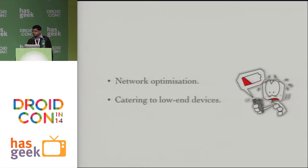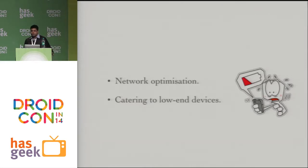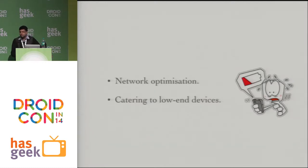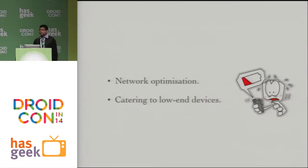If I were to pick two things that as an app developer you should care about if you're targeting the whole of India, it would be these two: network optimization and catering to low-end devices. As mentioned in yesterday's talk by Gulzar, a lot of network connectivity in India is flaky, and most people are not on Wi-Fi and 3G the way we would like to believe. We at Hike experienced all of this while building, and we continuously optimized our network communication layer to cater to that.